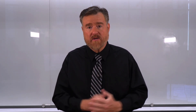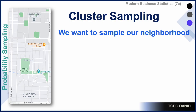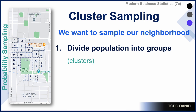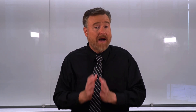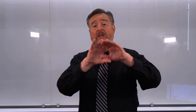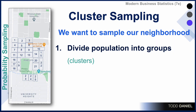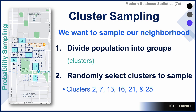Here's an example of how I might do cluster sampling. I go to a neighborhood near the university and want to sample it efficiently. First, I divide my population — the neighborhood — into groups or clusters, using blocks within the neighborhood. I assume the variability on each block is the same: although this neighborhood might differ from others in the city, the blocks within it differ from each other in the same way. I then randomly select which clusters to sample — clusters 2, 7, 13, 16, 21, and 25.